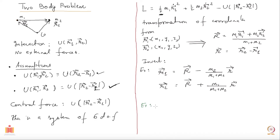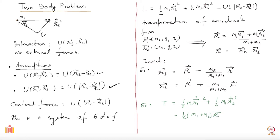Please check that the kinetic energy T, which is half m1 r1-dot squared plus half m2 r2-dot squared, becomes half (m1 plus m2) R-dot squared — that is the velocity of the center of mass squared — plus half times m1 m2 over (m1 plus m2) times r-dot squared.